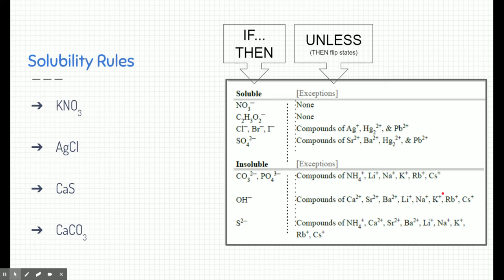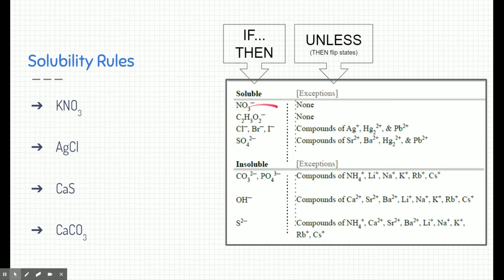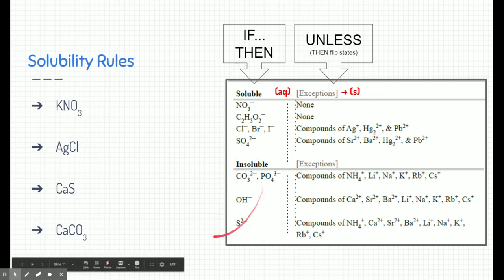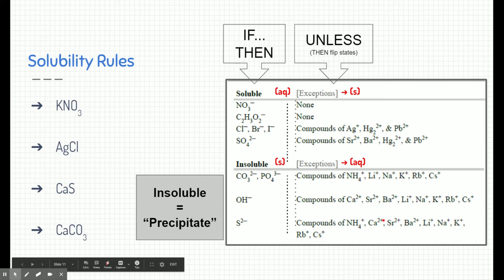So how do we know whether something will be soluble or insoluble? We use solubility rules, found on the back of your periodic table. The left side is the main if-then statement. The top part lists anions — if you see these anions in a compound, that compound will be soluble (designated AQ). Sometimes there are exceptions: if certain cations are attached to those anions, the state flips and the compound becomes insoluble. Similarly, some anions at the bottom of the list produce insoluble products, unless attached to specific exception cations that make them aqueous.